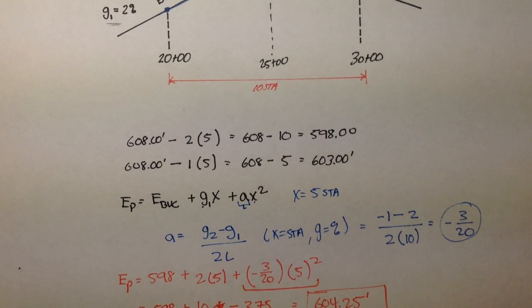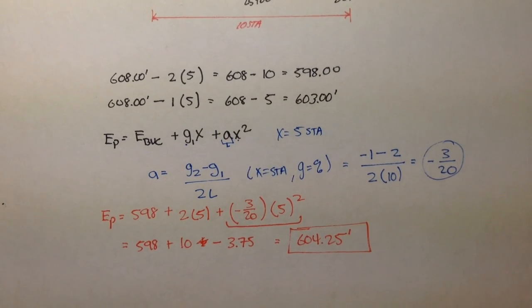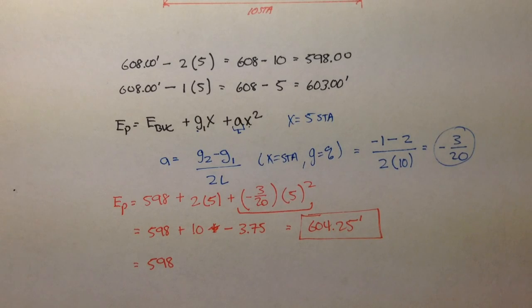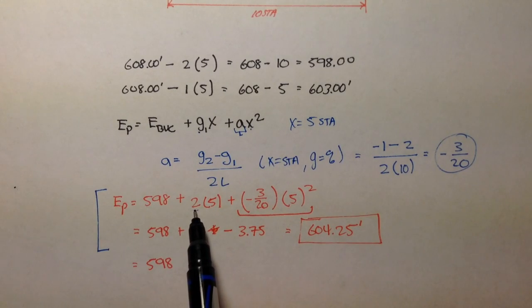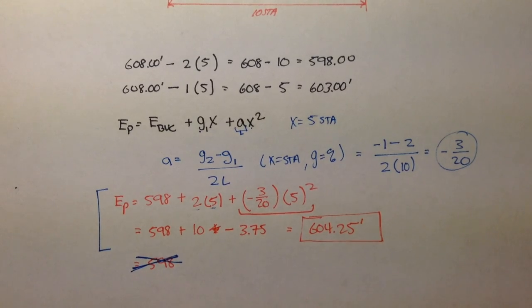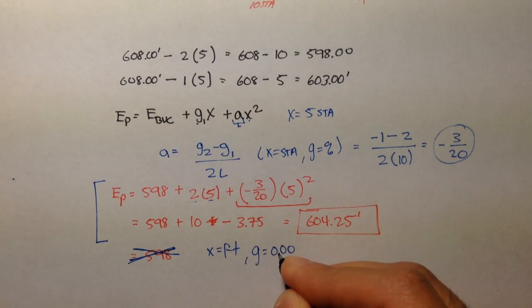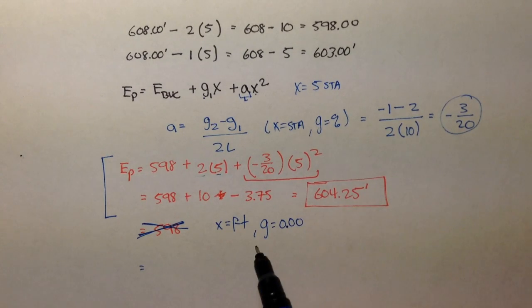There's also another way to do this. I'm just showing you that you have to stay consistent with the distance and with the grade. In this equation, we made sure our grade was in the percent form it's in, and then X is the distance and we kept it in stations. Let's say we wanted X in feet, and we wanted the grade in decimal.